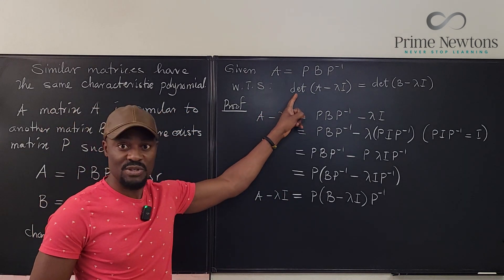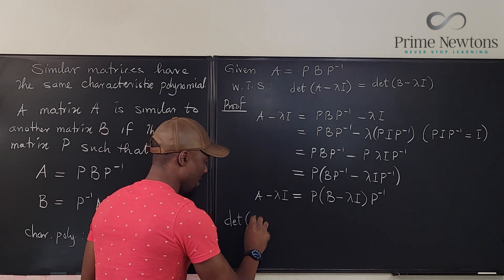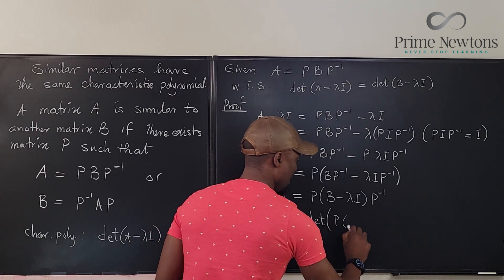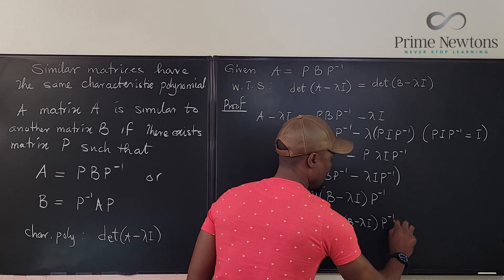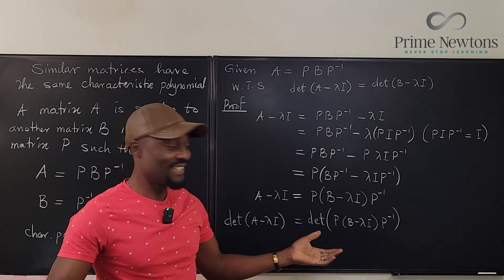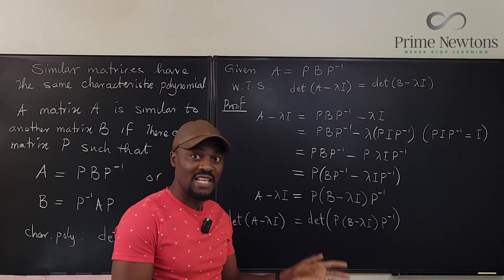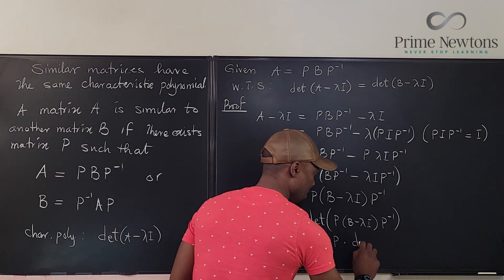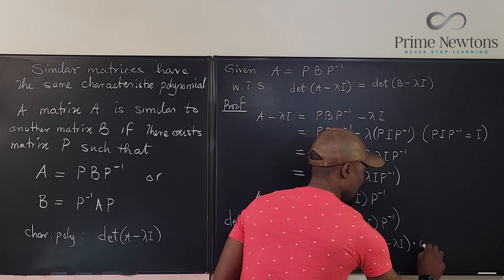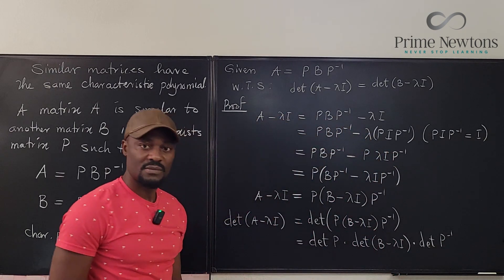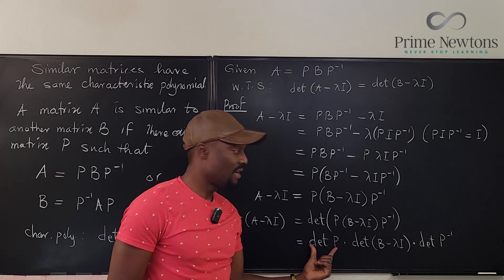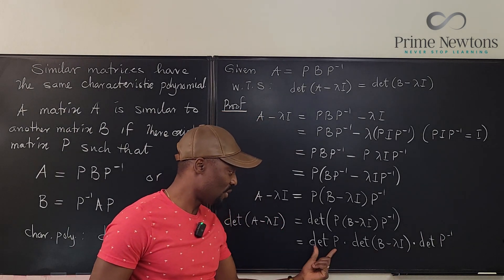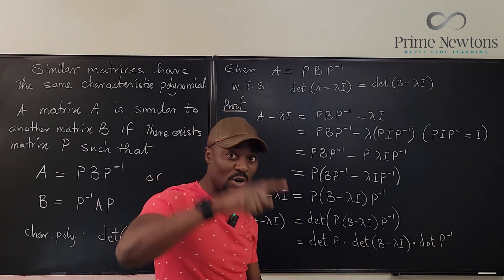Taking the determinant of both sides: the determinant of A minus lambda I equals the determinant of P(B minus lambda I)P inverse. By the multiplicative property of determinants, this equals the determinant of P, times the determinant of B minus lambda I, times the determinant of P inverse. The determinant of P and P inverse are both scalars.